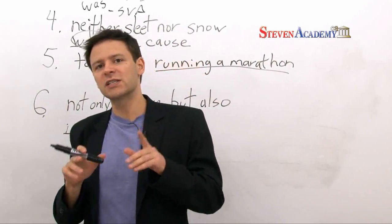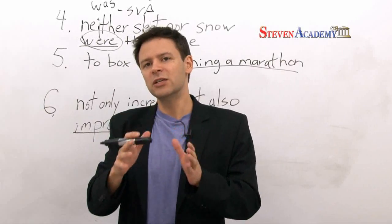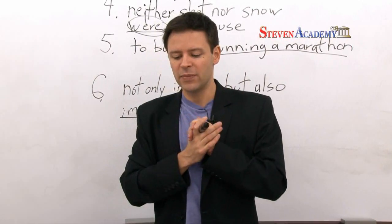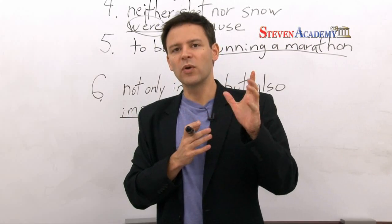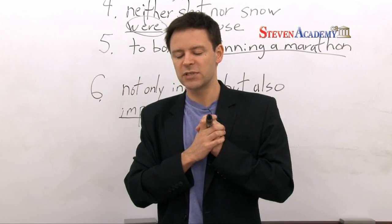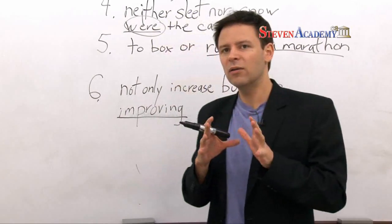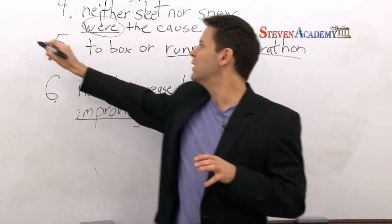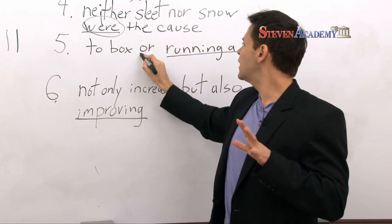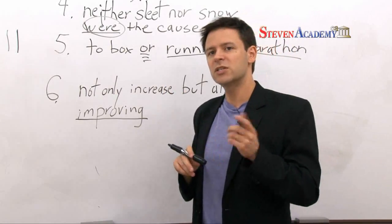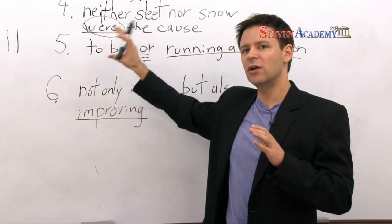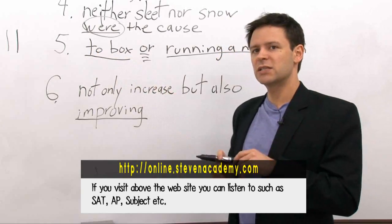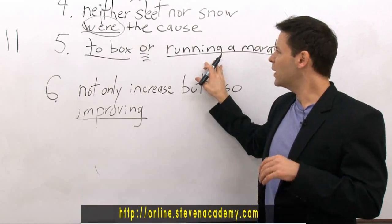Numbers five and six are a little trickier, and I'm going to use them to launch into our next topic today. Number five: 'Sports journalists have debated whether it is a more strenuous task to box for 10 rounds or running a marathon.' The issue here is what we call parallel structure, or parallelism. A good way to know you're looking for parallelism is a conjunction or a comma — or a series of commas. The things connected on either side need to match up. Here we have 'to box' — an infinitive — and on the other side we have 'running,' which doesn't match.